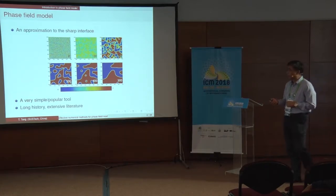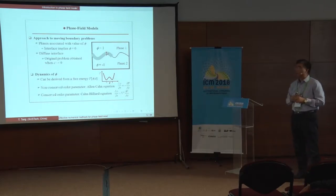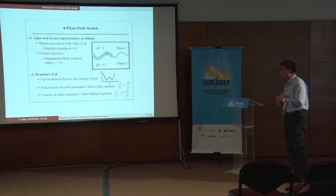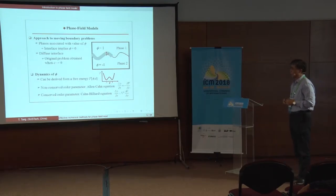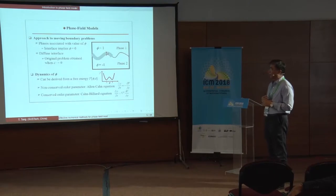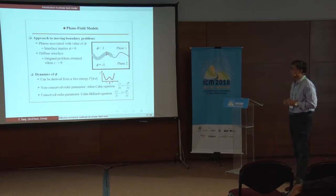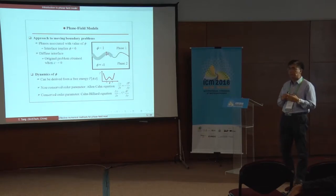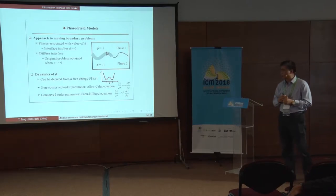Phase field models were originally used to describe moving boundary problems. You have a moving boundary with a phase value of plus one or minus one, and a very thin layer of thickness epsilon. To describe the dynamics of this phase function, we normally derive the equation from a free energy. For a non-conserved order parameter, we end up with the Allen-Cahn equation, which is a second-order nonlinear diffusion equation.